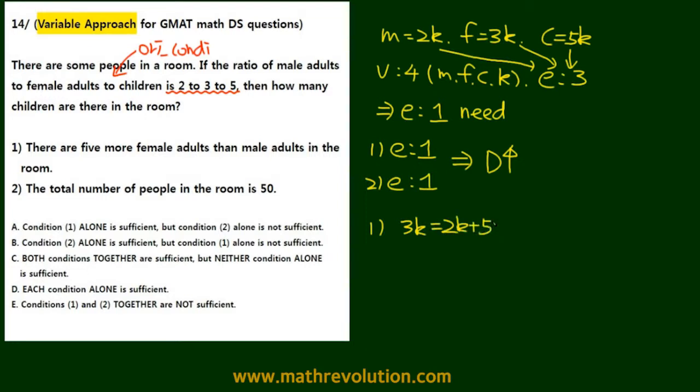In condition 1, it says 3k is equal to 2k plus 5, meaning k is 5. So since c is 5k, c is going to be 25. Condition 1 is sufficient.